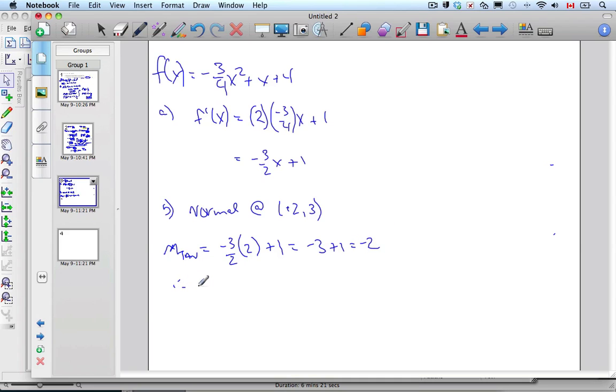Now, if I'm going to find the equation of the normal, I like to use this form of the equation, y minus y1 equals m times x minus x1. This is the same as y equals mx plus b, but this one works out much nicer. I know a point, 2, 3. So, y minus 3 equals my slope, 1 half, x minus 2.